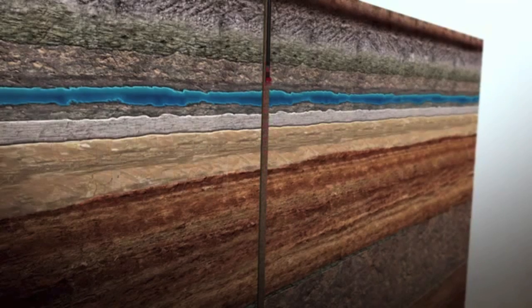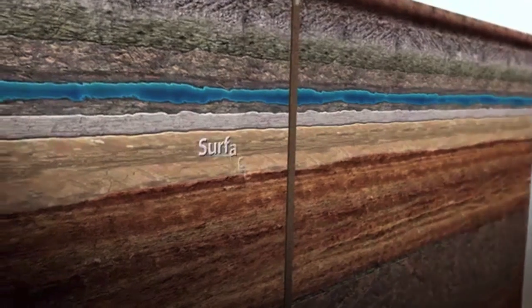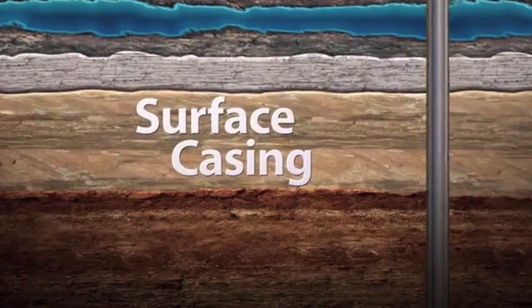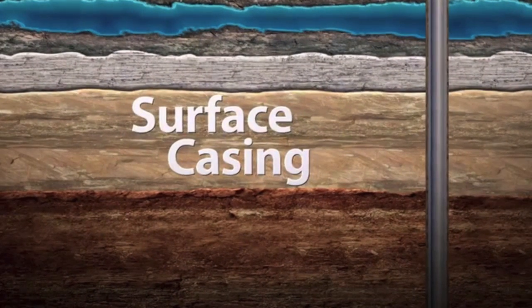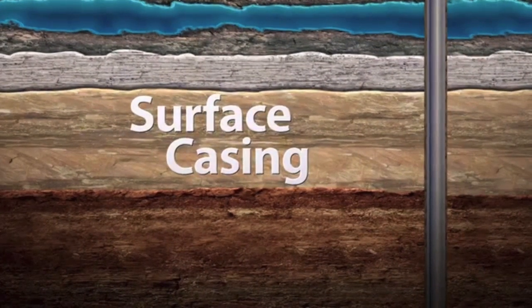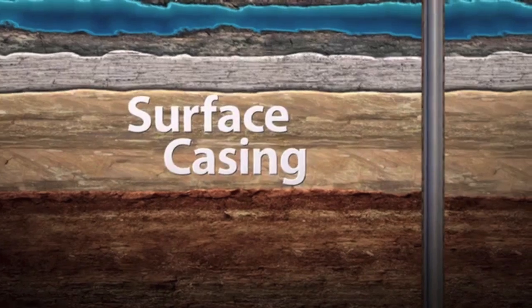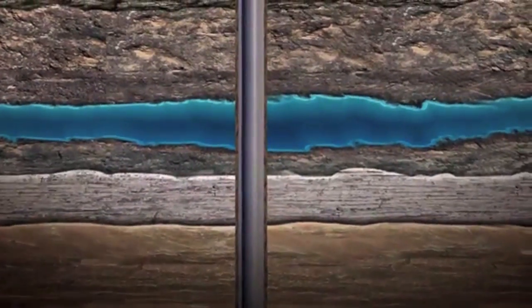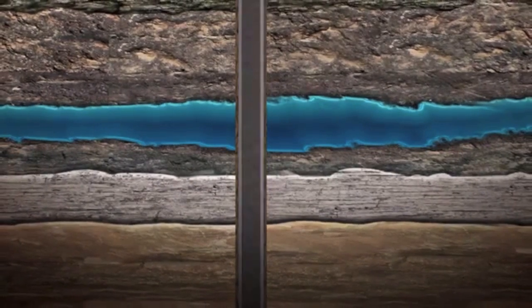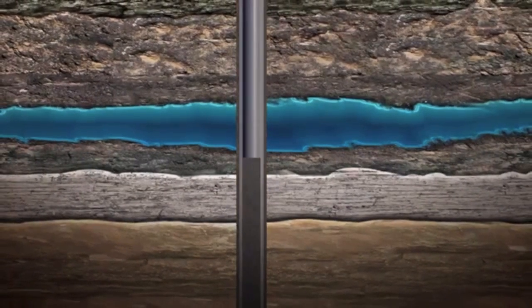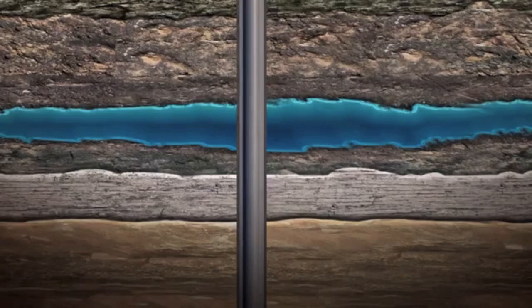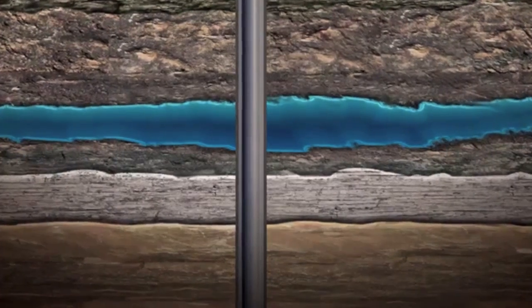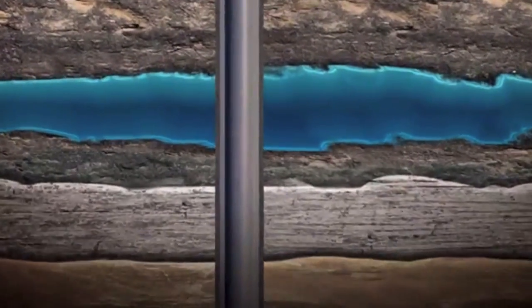At this point the drill pipe and bit are removed and a steel tube called surface casing is set inside the well. The tube stabilizes the well sides, creating a protective barrier for both the well stream and any underground freshwater reservoirs. Cement is then pumped into the well through and out the casing, displacing any remaining drilling fluids and permanently securing the casing in place.